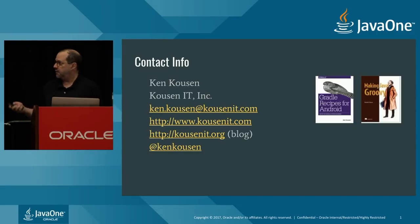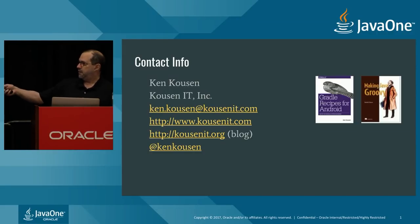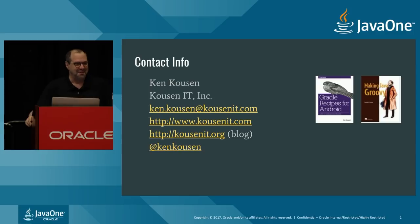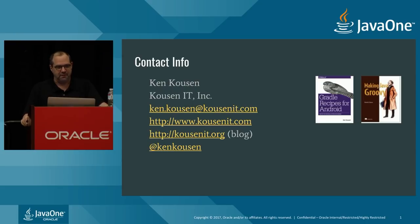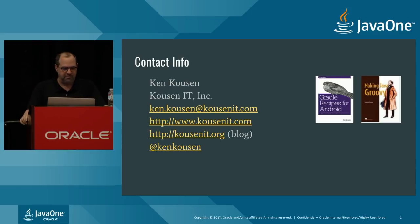My name is Ken Cousin — it's cousin like the relative, even though it doesn't look like it. My company is Cousin IT. My wife refers to it as Cousin It, like the Addams Family — it was her idea. There's my email address, website, blog, and Twitter handle. Feel free to contact me whenever.